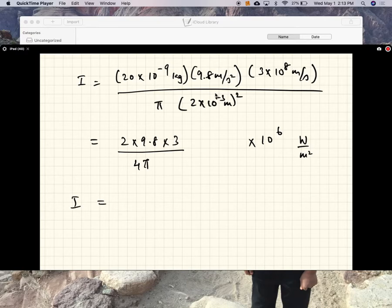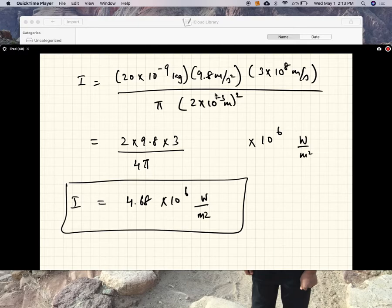So the intensity is 4.68 times 10 to the 6 watts per meter squared. Remember, the sunlight was 10 to the power of 3 watts per meter squared. So you could suspend a microgram styrofoam ball with light of intensity 10,000 times as intense as sunlight.